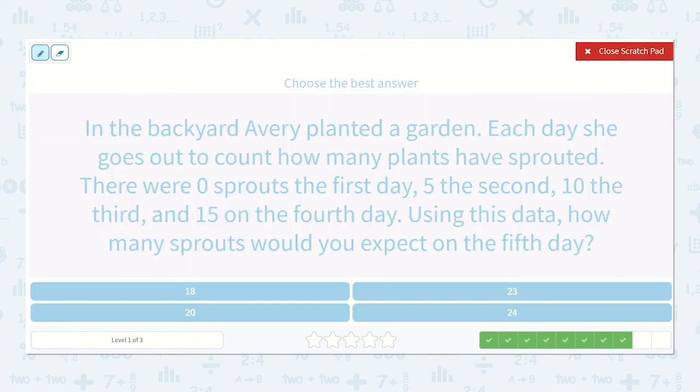In the backyard, Avery planted a garden. Each day, she goes out to count how many plants have sprouted. There were 0 sprouts on the first day. 5 the second, 10 the third, and 15 on the fourth day. Using this data, how many sprouts would you expect on the fifth day? I could write these numbers out, but I already see a pattern. Do you? Let's look. 0, 5, 10, 15. Yeah, here is counting by 5, so what would be next? Yep, 20.